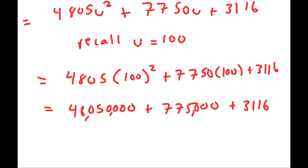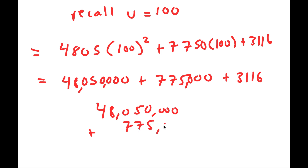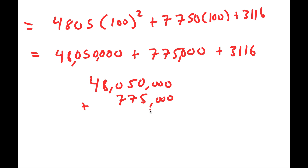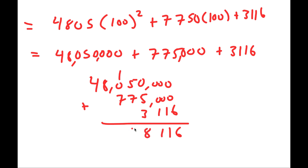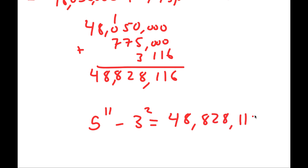Adding all of these up: 48,050,000 plus 775,000 plus 3,116. My final answer for 5 to the power of 11 minus 3 squared is 48,828,116.